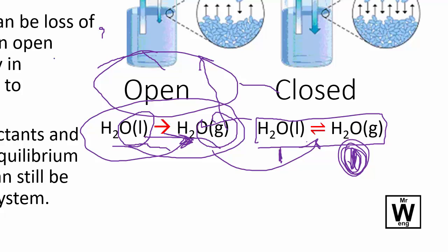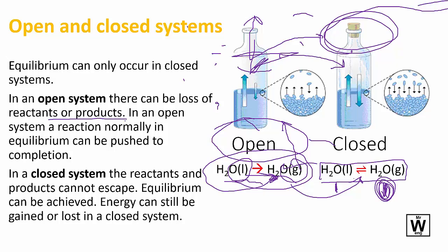So in an open system there can be a loss of reactants or products and matter can go in or out. But with a closed system, matter cannot go in or out. Both systems can allow energy to go in or out.